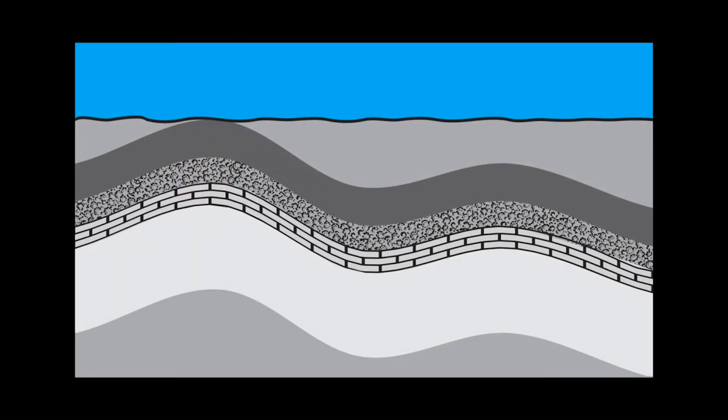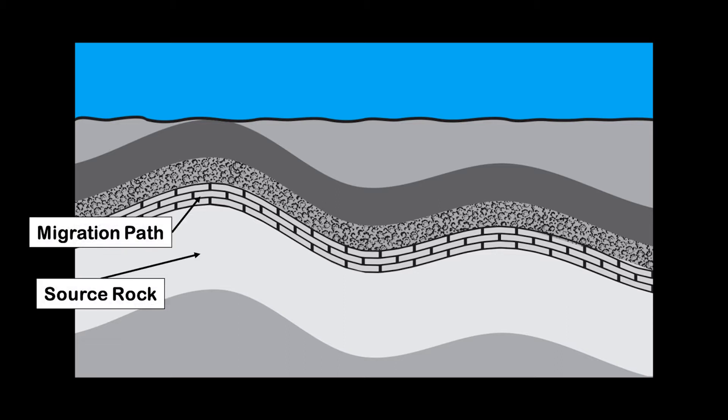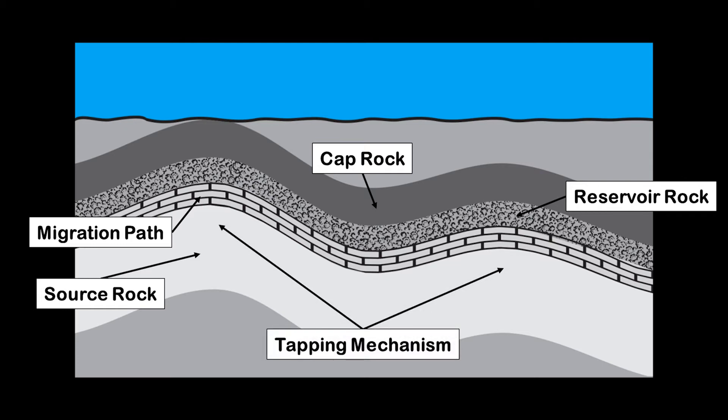Once again there are five features required for hydrocarbons to be found. We need a source rock, a migration path, a reservoir and cap rock, and a trapping mechanism.